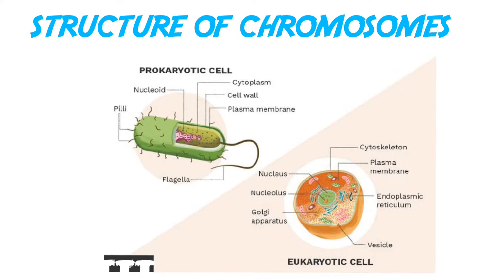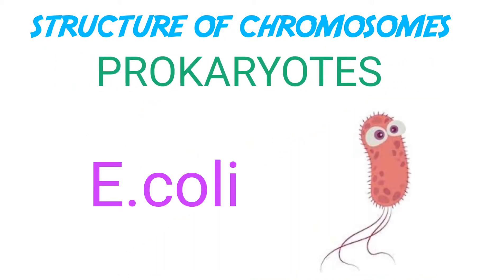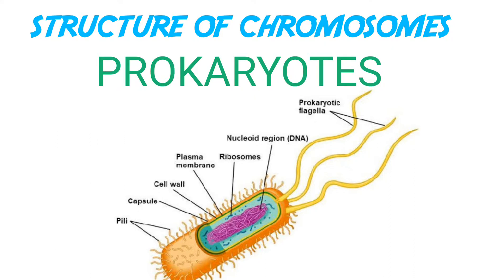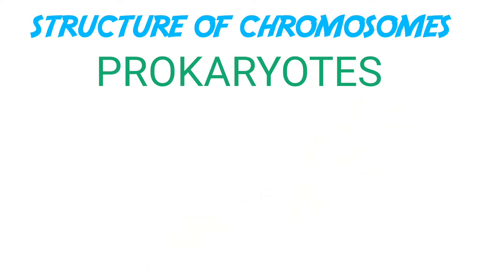The structure of chromosomes is very different in prokaryotes and eukaryotes. In prokaryotes, for example E. coli, they do not have a defined nucleus. DNA, being negatively charged, is held with some proteins that have positive charges in a region termed as the nucleoid. The DNA in the nucleoid is organized in large loops held by proteins.